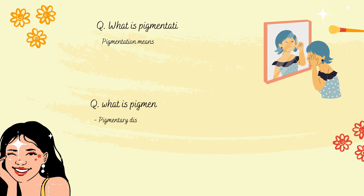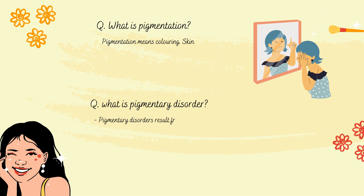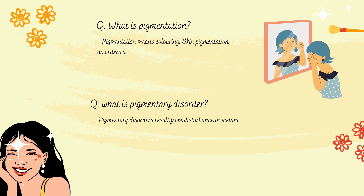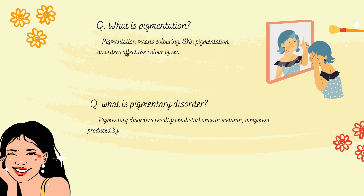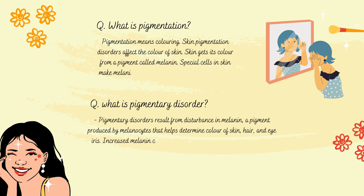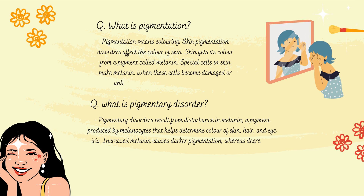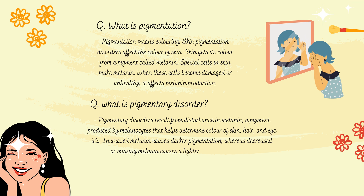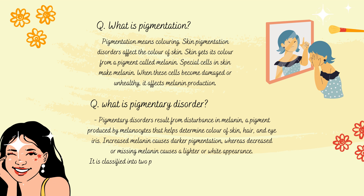Hello everybody, welcome to Body Capsule. Today we will discuss about pigmentation — what is normal pigmentation and what is a pigment disorder. Skin pigmentation disorder refers to a range of conditions that affect the coloration of skin. This disorder occurs due to abnormalities in the production, distribution, or functioning of melanin, the pigment responsible for skin, hair, and eye color.